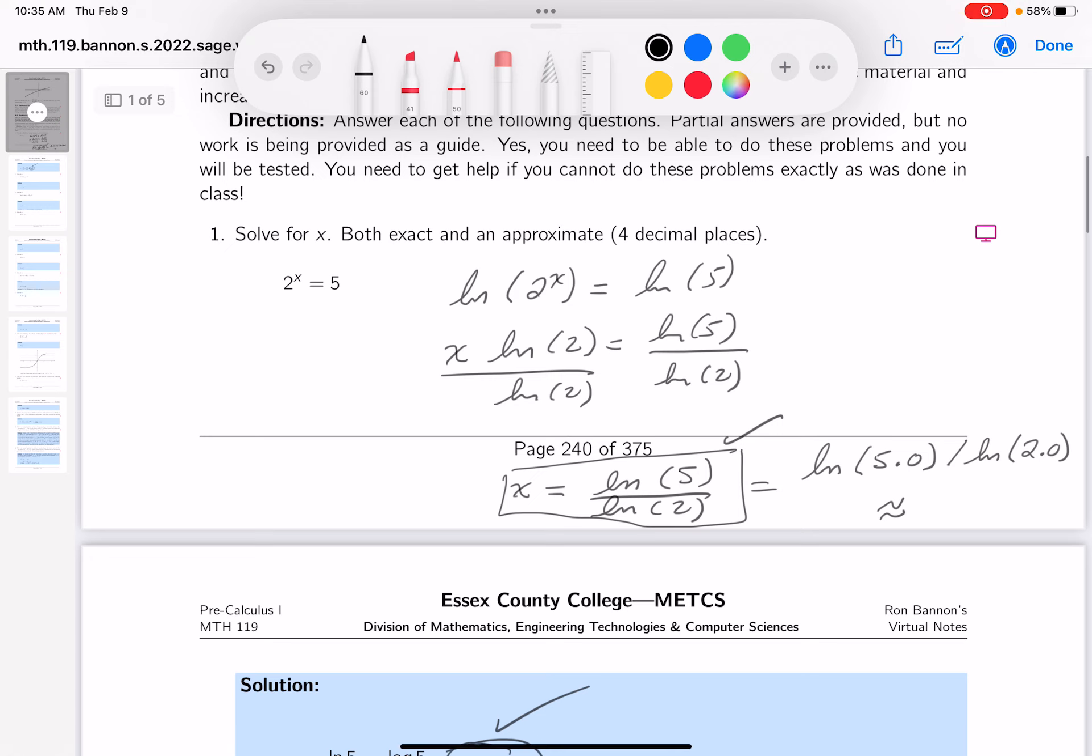I just want to briefly talk about, you might be watching YouTube videos and see people do these things slightly different. They use log base 2. I'll put this over here. You don't have log base 2 on your calculator, though. But if you use log base 2 of 2 to the x, that would be log base 2 of 5. We're taking log base 2 of both sides.